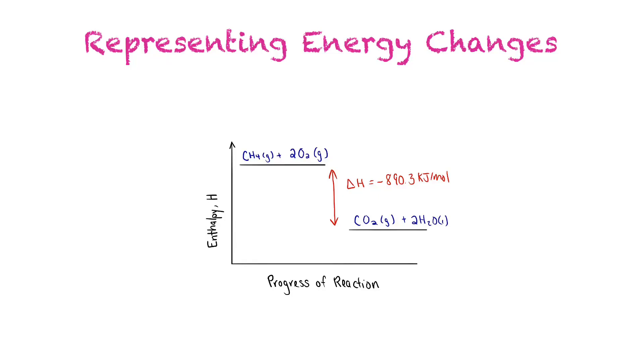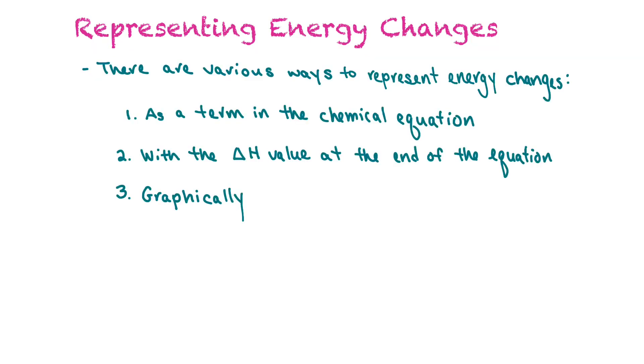In this video lesson, we're going to learn how to represent energy changes in a variety of different ways. As said before, there are various ways to represent energy changes. One of the ways could be to include it as a term in the chemical equation itself. Another way is to record the delta H value at the end of the equation. And the third way is to represent these energy changes graphically by doing potential energy diagrams.